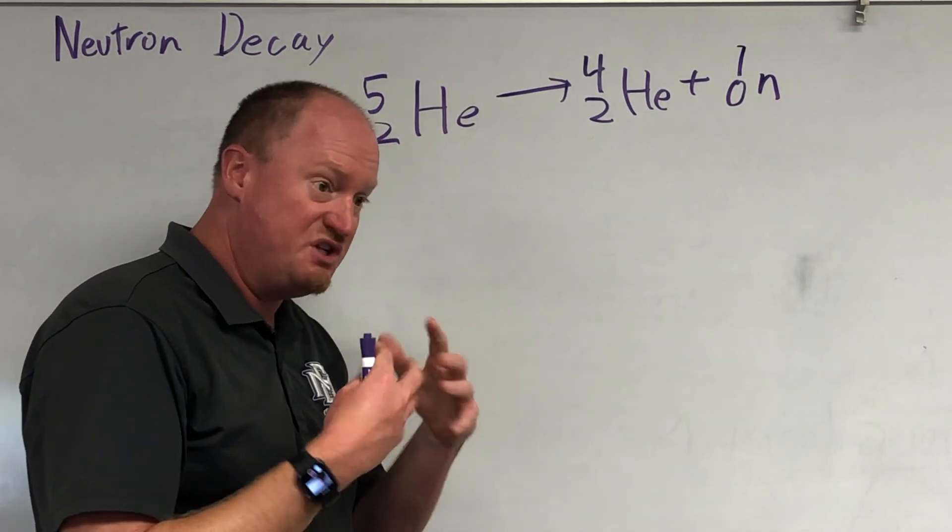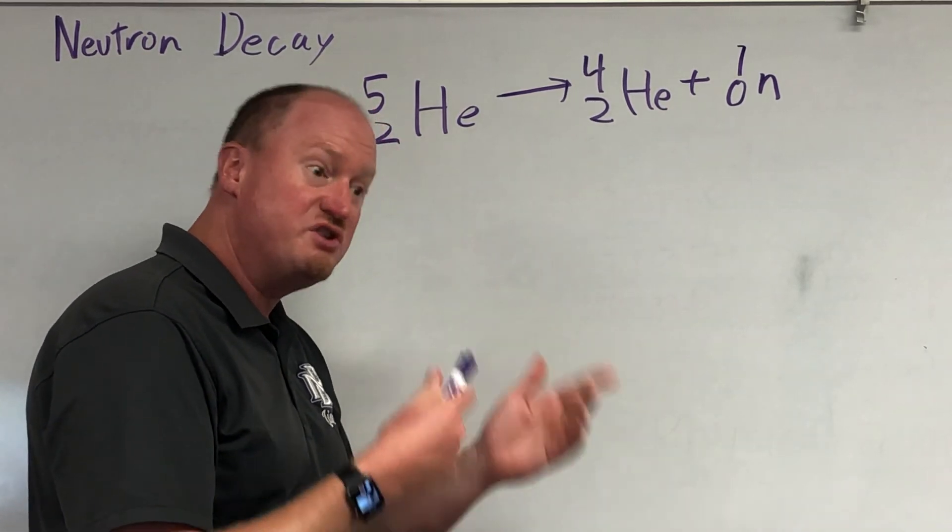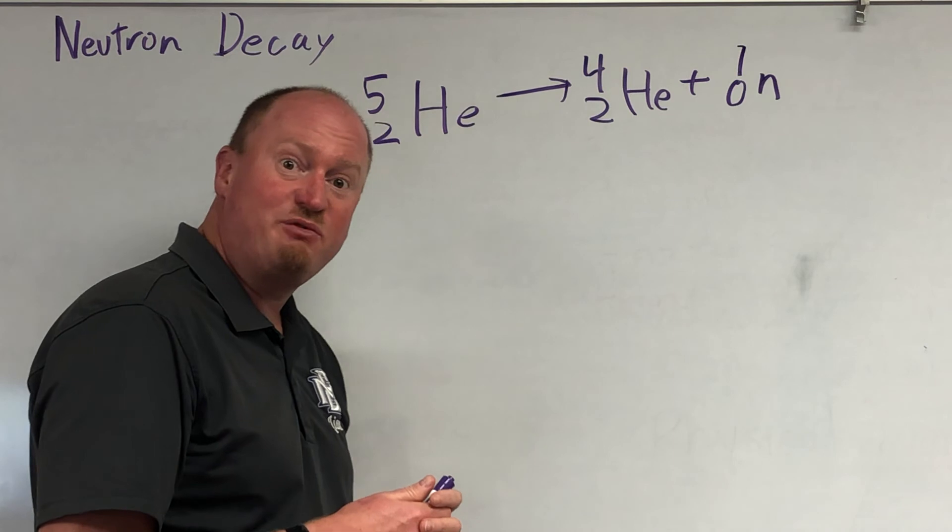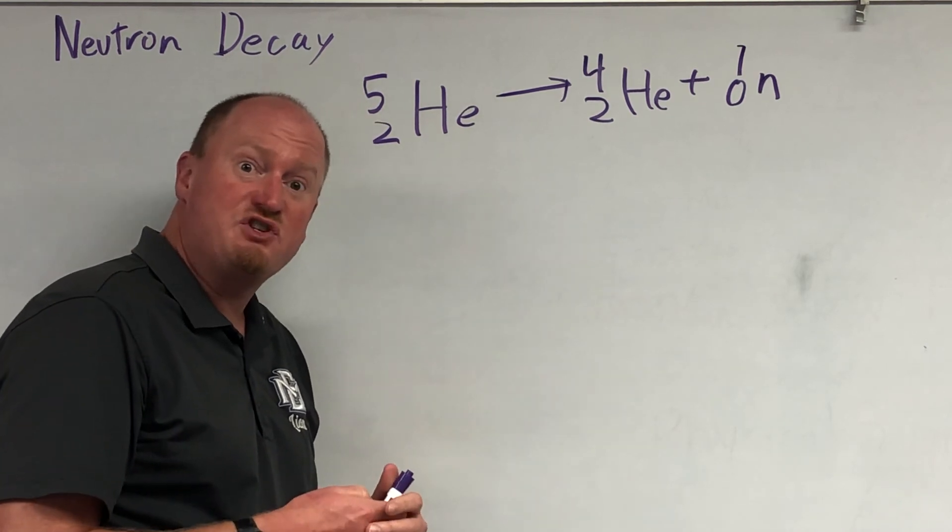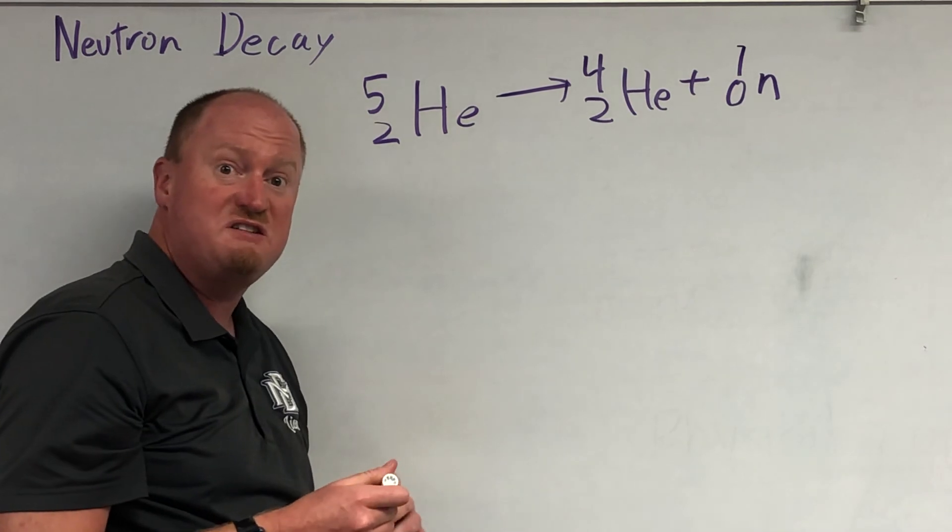And those unstable nuclei, which have a few too many neutrons, are going to go through radioactive reactions, and you are now the source of radiation. So that's one of the things that makes neutron radiation a little more dangerous than some of the other forms.